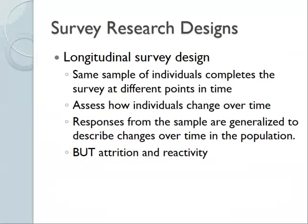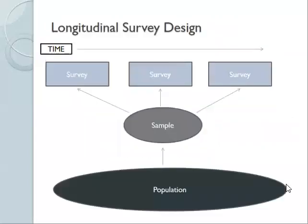Other issues with longitudinal survey design include attrition — people are less likely to participate over time, making your sample less representative. There's also reactivity, where people might change because they know they're being observed. If you give people a survey about how they feel about themselves and then the same survey six months later, they already know what you're studying, which could influence their responses. In the longitudinal design, the same sample completes the same survey at multiple time points.